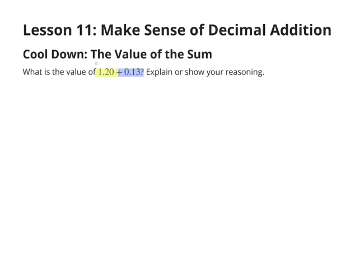I have highlighted in yellow this first decimal, which is 1 and 20 hundredths, and in blue we have 13 hundredths. We are to explain or show our reasoning.